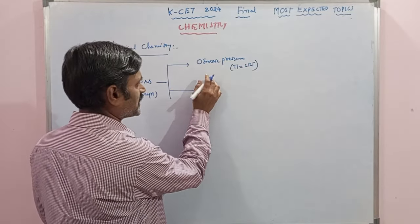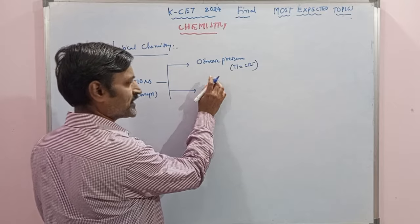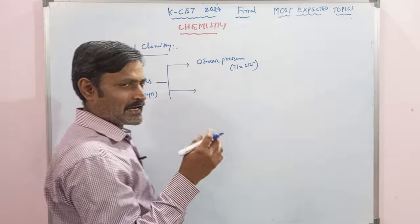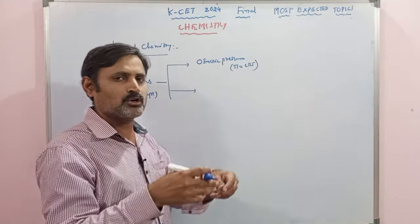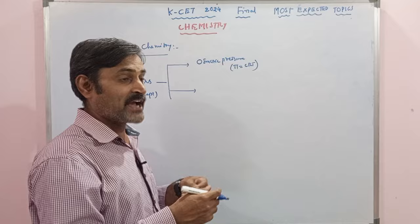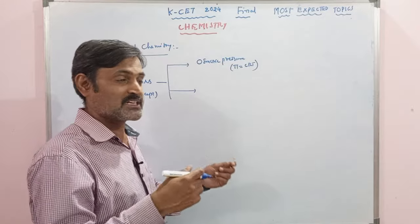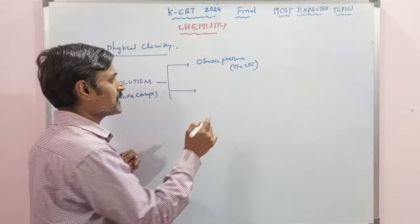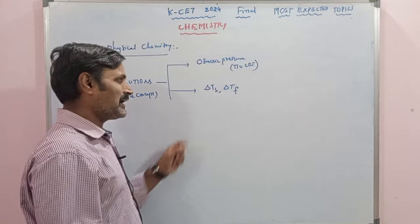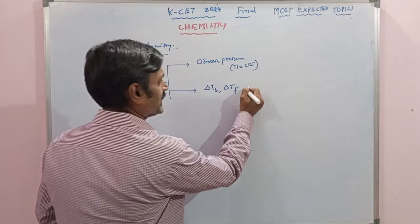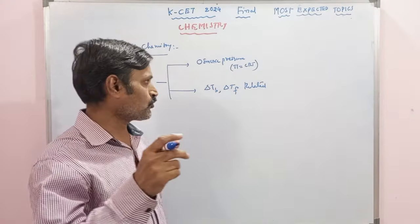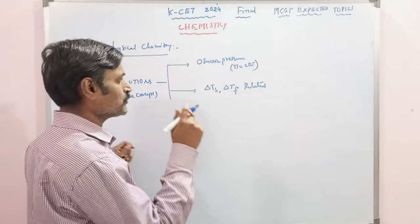In osmotic pressure we have isotonic solutions questions, band effect related questions, reverse osmosis questions, or any kind of fruit or egg immersed in solutions. Different types of isotonic and hypertonic solutions — definition type and statement type questions are guaranteed. Next we have ΔTb and ΔTf, that means elevation of boiling point and depression of freezing point — mathematical formula related colligative property questions and problems are going to be expected.